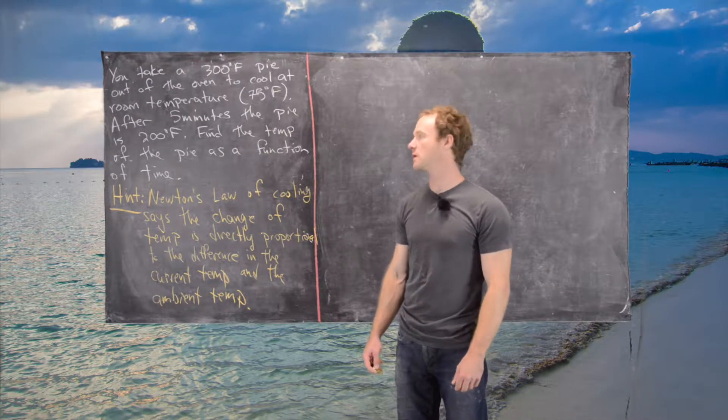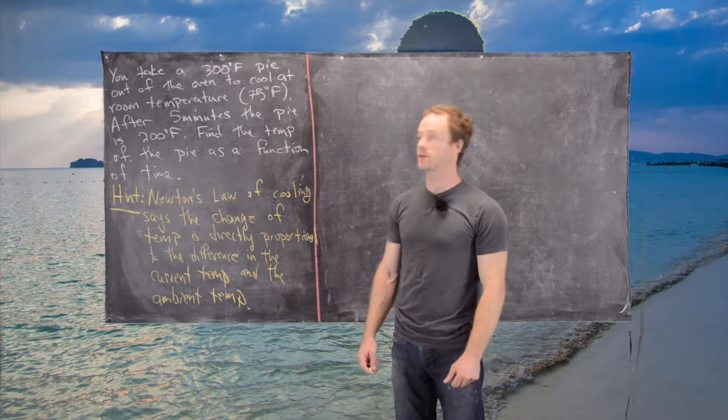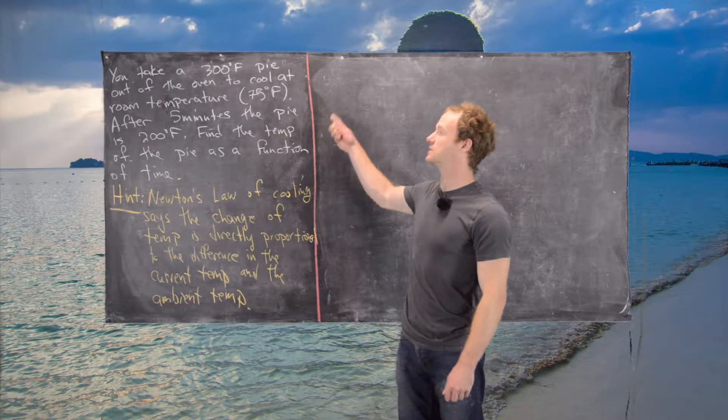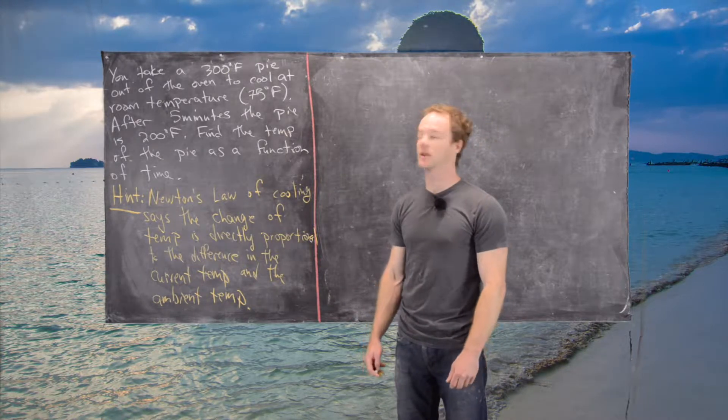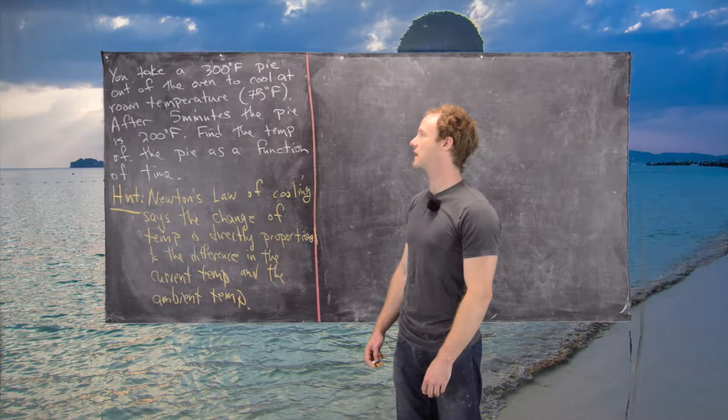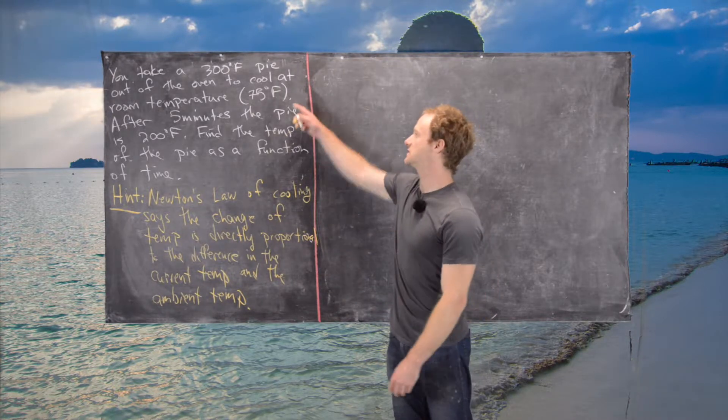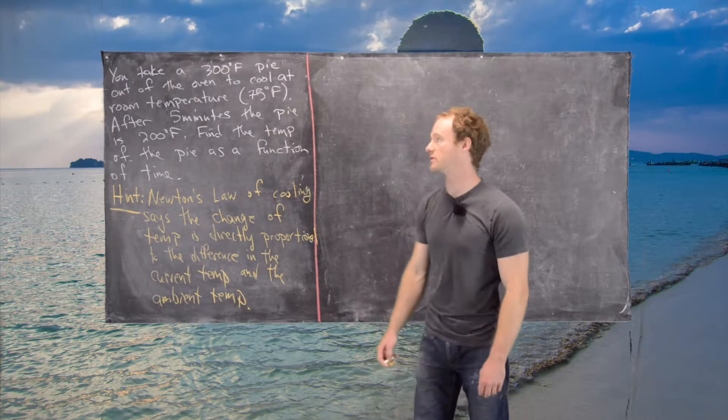Here we've got another application using differential equations. Let's suppose you have the following scenario: you take a 300 degree Fahrenheit pie out of the oven and let it cool off at room temperature. Let's assume that room temperature is 75 degrees Fahrenheit.